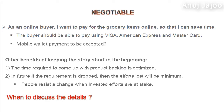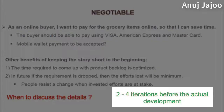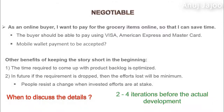So when should these details be discussed? The details are to be discussed two to four iterations before the actual development, in a meeting called product backlog refinement or product backlog grooming. That is the right time — not too early and not too late.